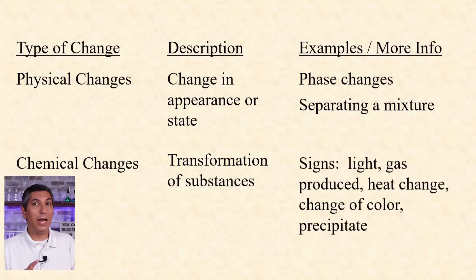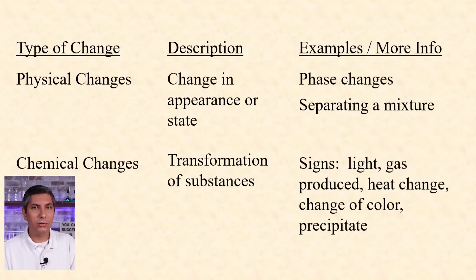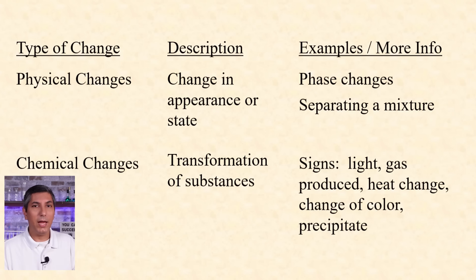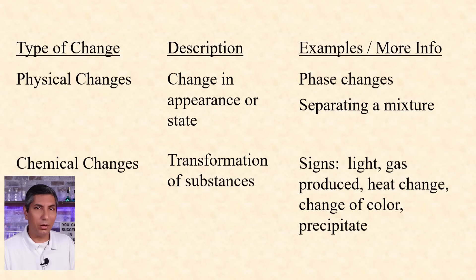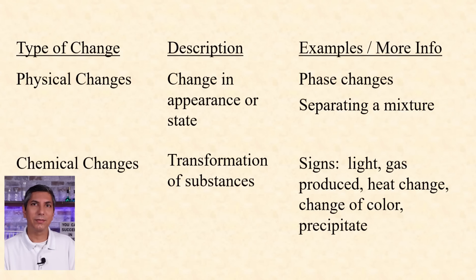There are several signals that a chemical change is taking place: light is being given off, gas is produced, a large change in temperature, a change of color, a precipitate being formed. These are all good ways to know that a chemical reaction is taking place.